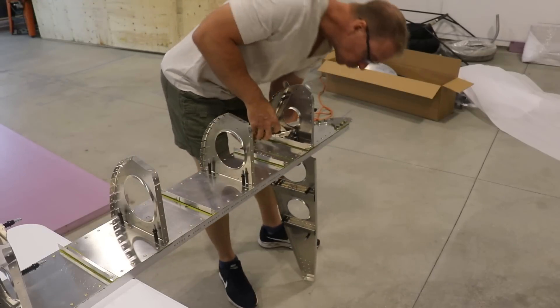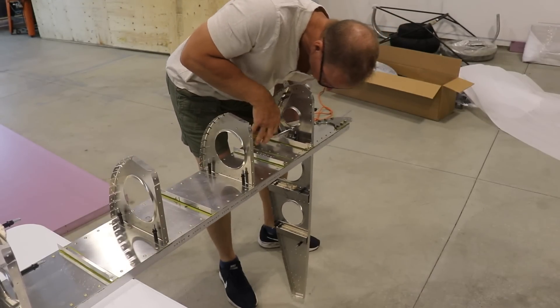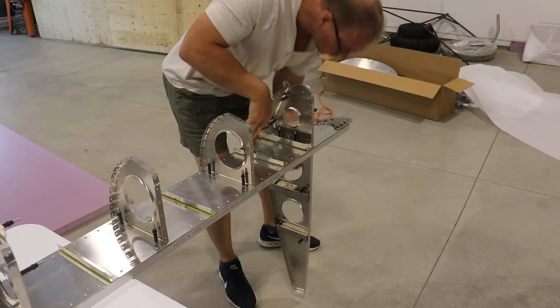Again, since I'm building both of these wings kind of evenly or at the same time, I'll cleco the ribs on the other wing also.